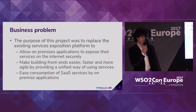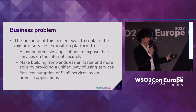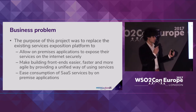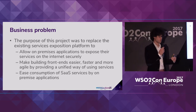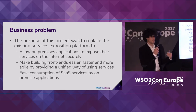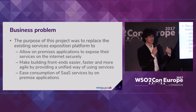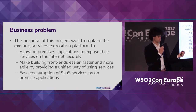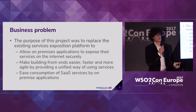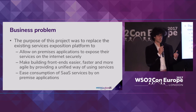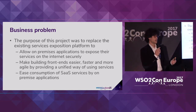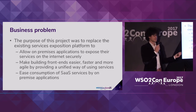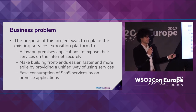What we were asked to do is build an integration platform to replace the existing one. We had to allow on-premise applications to expose their services on the internet in an easy and secure way. This would allow front-ends to be built more easily, and we also had to expose external services — SaaS functions — to on-premise applications.